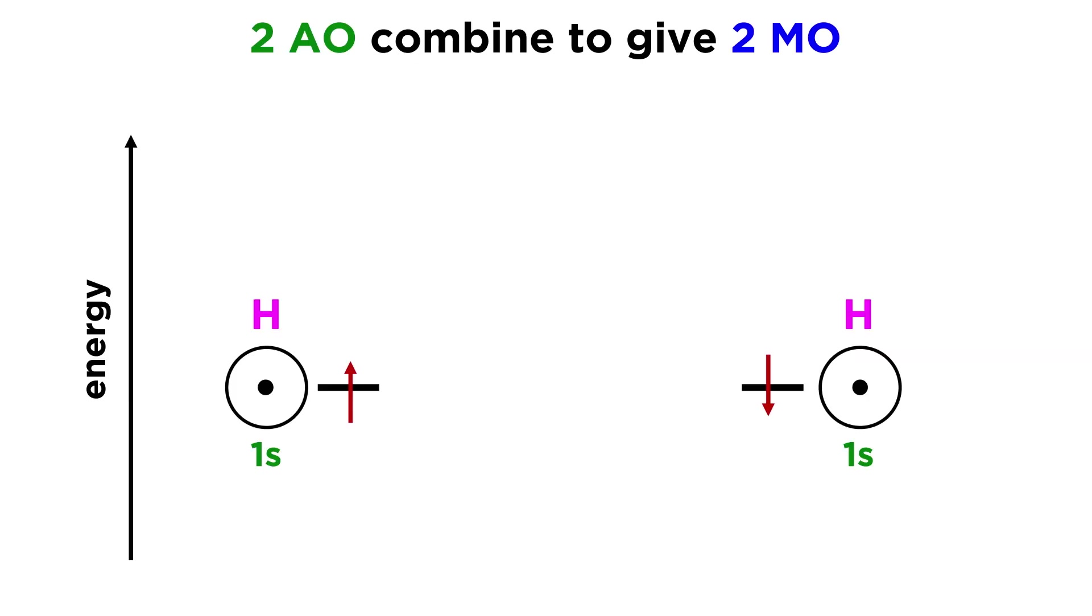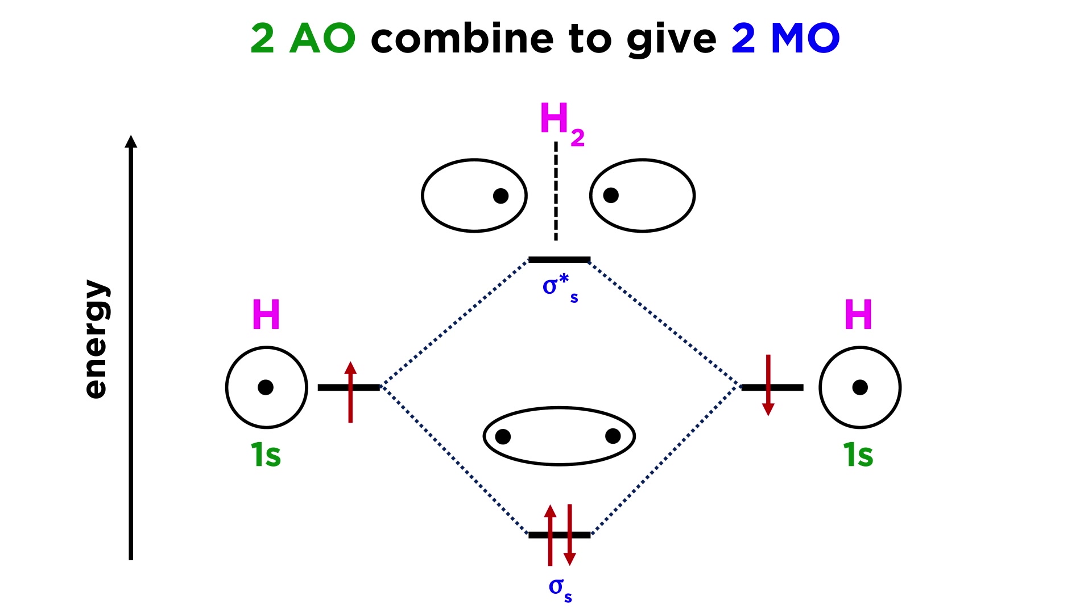We know that when two atomic orbitals combine, two molecular orbitals will be generated, one lower energy bonding orbital and one higher energy antibonding orbital.